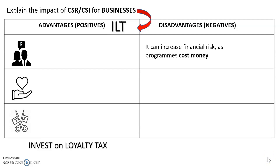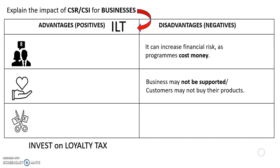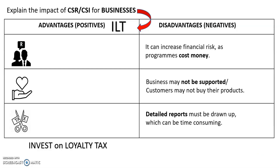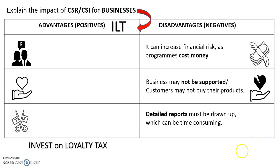The disadvantages — the easiest facts: it can increase financial risk as programs cost money; businesses may not be supported and customers may not buy their products; and detailed reports must be drawn up, which can be time consuming. Looking at pictures to remember this: the first one is money flying away, so it can be a financial risk — it costs money. The hand is there and available, but the broken heart shows that maybe they don't support the business. Then there is a report with an 'I', showing that the reports are in detail.